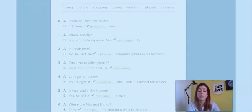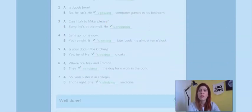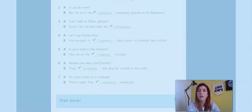Okay. So, let's check. Number one is where's Molly? She's in the living room. She's watching TV. Number two. Is Jacob here? No, he isn't. He's playing computer games in his bedroom. Number three. Can I talk to Mike, please? Sorry. He's at the mall. He's shopping. Number four. Let's go home now. You're right. It's getting late. It's almost 10 o'clock. Number five. Is your dad in the kitchen? Yes, he is. He's baking a cake. Number six. Where are Alex and Emma? They're taking the dog for a walk in the park. And number seven. So, your sister's in college? That's right. She's studying medicine.